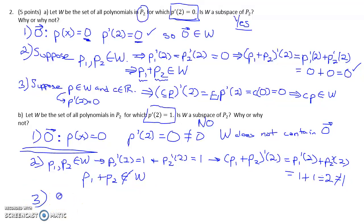And similarly, if we do a scalar C times a polynomial in W, take the derivative at 2, that's going to be the scalar C times P prime of 2, which is going to be the scalar C times 1. So we get C. And this is where C is any number, so there are a lot of cases where this is not 1. Definitely, the scalar C is not necessarily equal to 1, so it's not closed under scalar multiplication either.